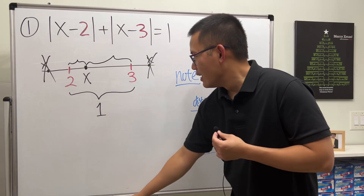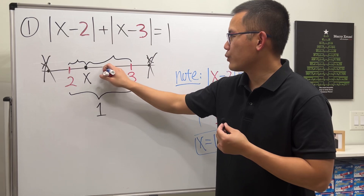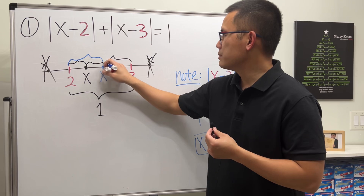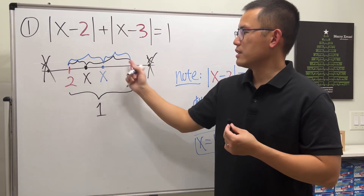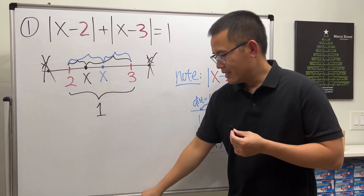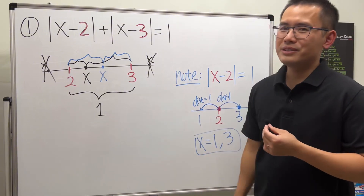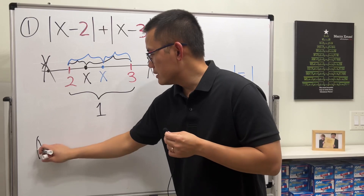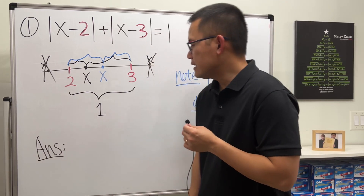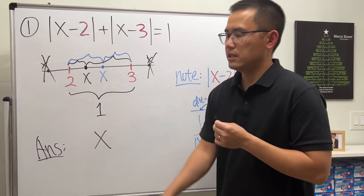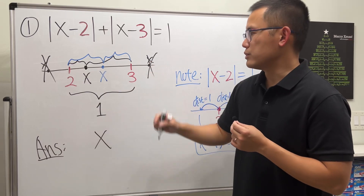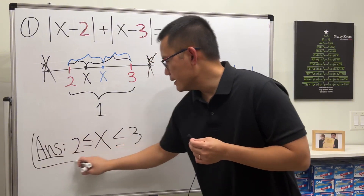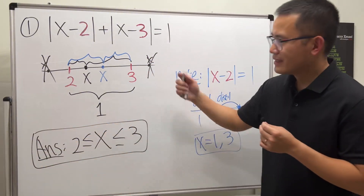In fact, we could pick x anywhere in between 2 and 3 and the two distances always add up to 1. So that's the trick for this question — we have infinitely many solutions. The answer is any x between 2 and 3, including the endpoints. That's the first one.